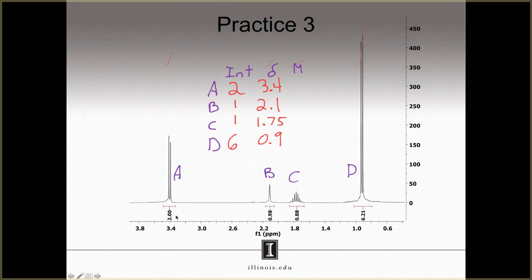Now multiplicity. A has two peaks, therefore that's a doublet, which I shall designate with lowercase d. B is a singlet. C has seven peaks, therefore that's a septet, which I shall shorten to just sep. And then D is another doublet. Excellent, that's the entire table of information that you can pull out of an NMR spectra based on what we've discussed so far.